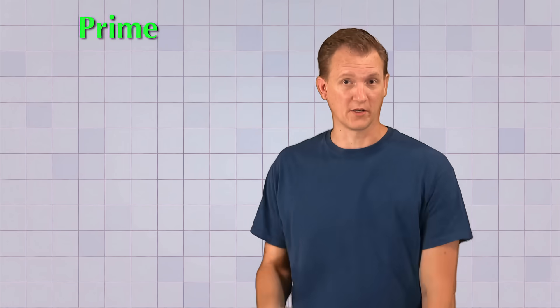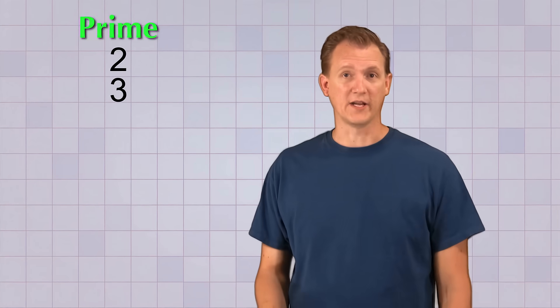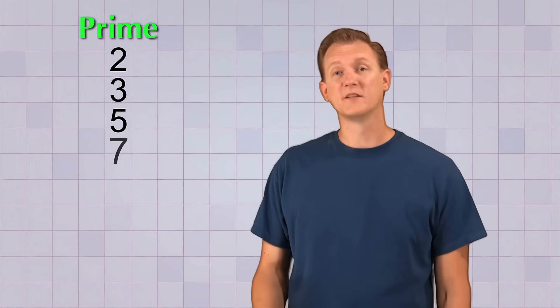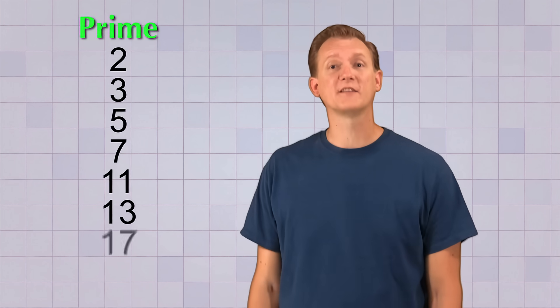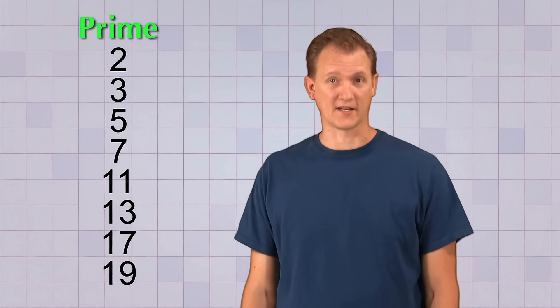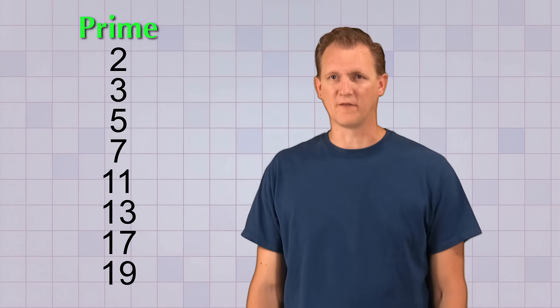Here's why: 7 is a special kind of number called a prime number. A prime number is just a number that has exactly two factors — itself and 1. There are a lot of prime numbers. Here's a list of all the prime numbers that are less than 20: 2, 3, 5, 7, 11, 13, 17, and 19. Those are the ones you'll use most often.